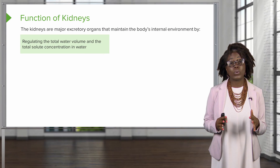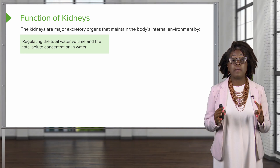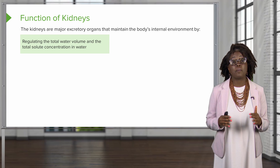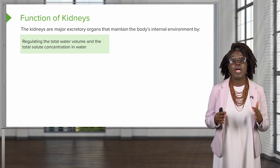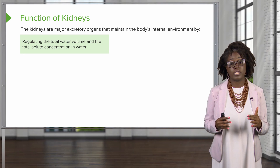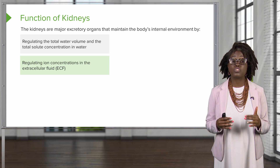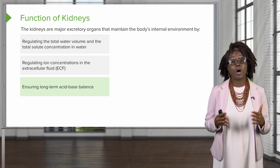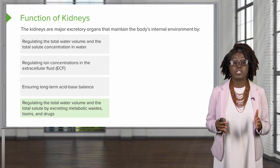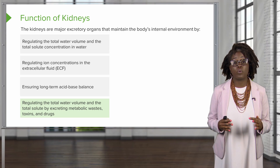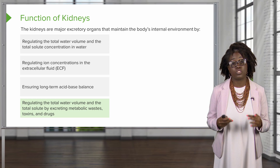The kidney is the major organ of the urinary system. The kidneys, a major excretory organ, maintain our body's internal environment by regulating the total water volume and total solute concentration in water, regulating our ion concentrations in our extracellular fluid, and ensuring long-term acid-base balance. They also regulate total water volume and solute by excreting metabolic waste, toxins, and drugs.